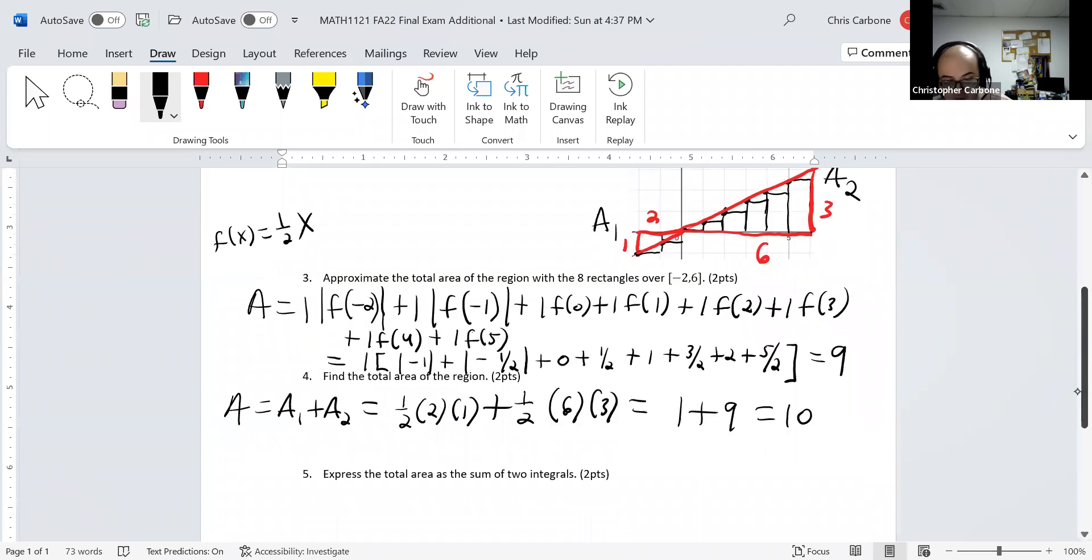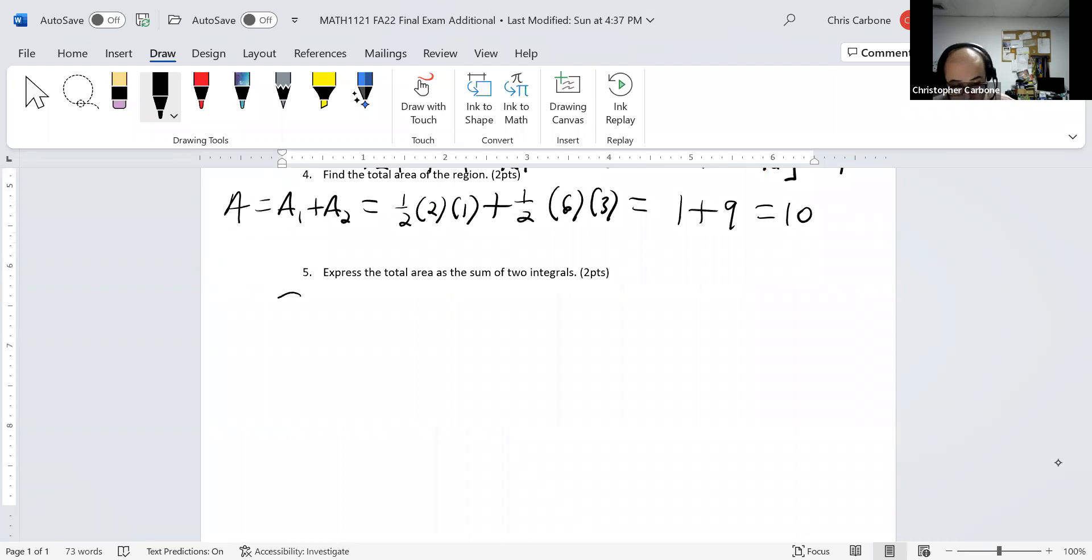And this last part wants to express this total area as the sum of two integrals. So, this was the integral from negative 2 to 6 of one half of x dx. But because we had that portion below the x-axis, we took the absolute value of the integral from negative 2 to 0 of one half x dx, plus the integral above the x-axis, from 0 to 6 of one half x dx.